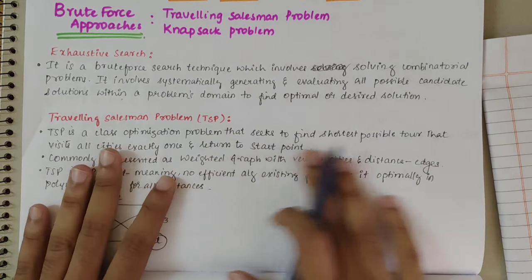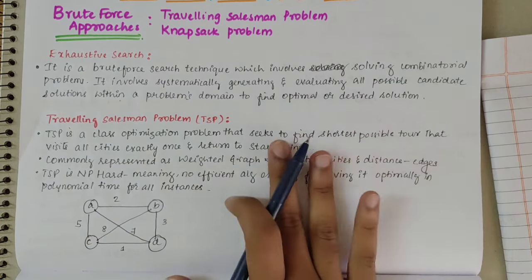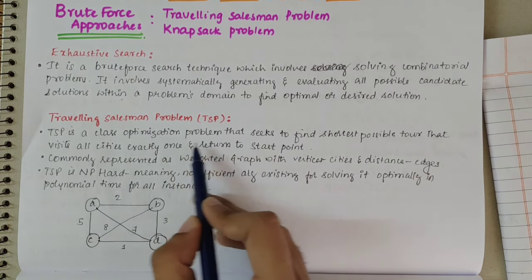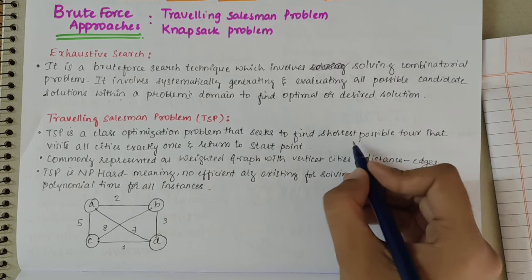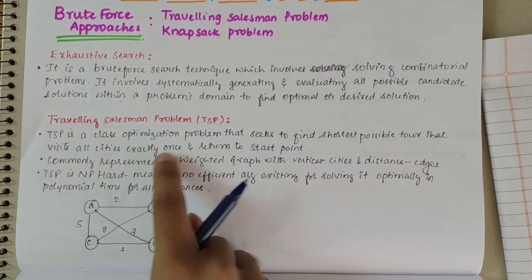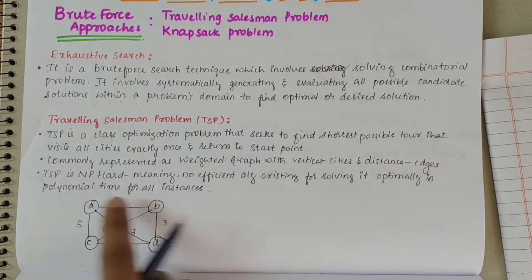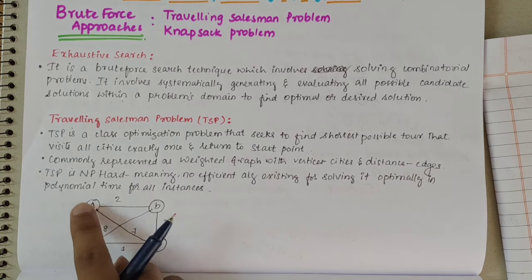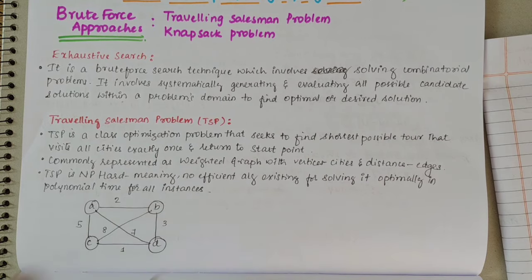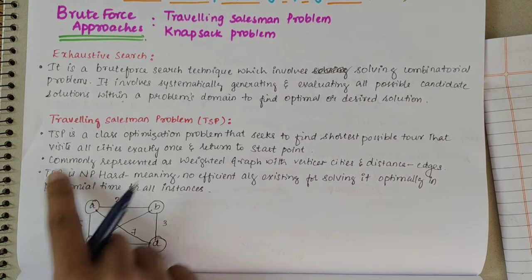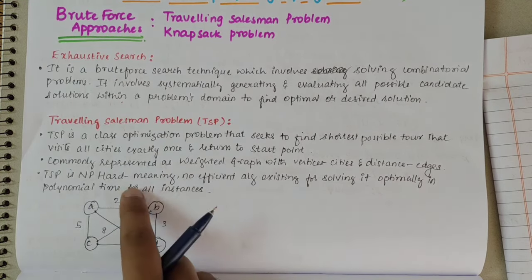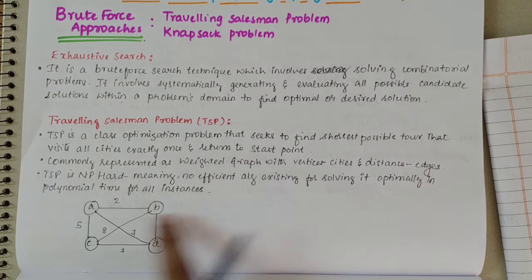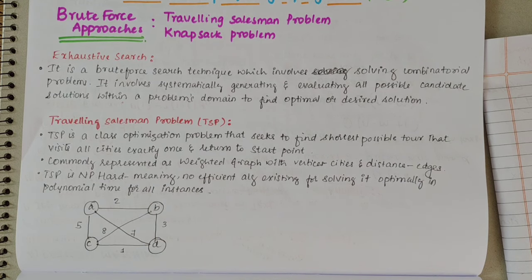The travelling salesman problem will come across in further modules as well; here we will be using the brute force approach. The travelling salesman problem is a classic optimization problem that seeks to find the shortest possible tour that visits all cities exactly once and returns to the start point. It is commonly represented as a weighted graph, with vertices being the cities and edges being the distances between them. It is an NP-hard problem — no efficient algorithm exists for solving it optimally in polynomial time for all instances.